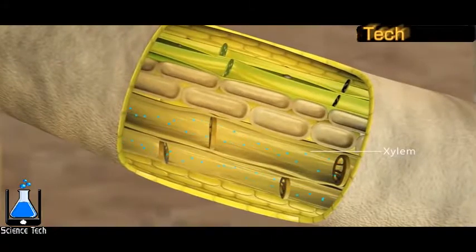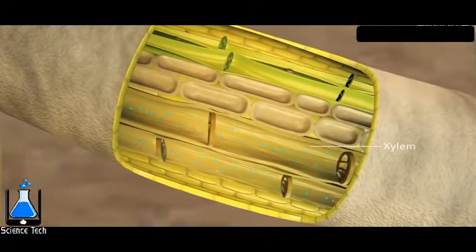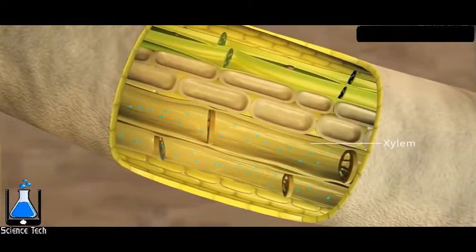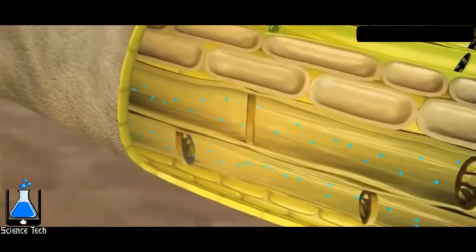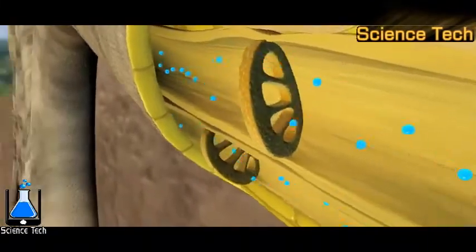Xylem vessels are long, narrow, hollow tubes containing no living material. The xylem transports water and soluble mineral nutrients from the roots to other parts of a plant.